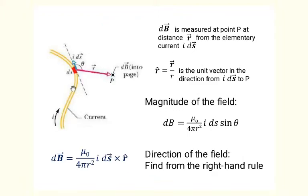Let us now understand the various terms in this formula. dB is measured at point P at distance r from the elementary current i times ds. r-hat is the familiar unit vector pointing in the direction from i ds to P. It is given by the total vector r divided by the length of r. If theta is the angle between the vectors ds and r, then the magnitude of the field is given by mu_0 divided by 4 pi r squared times i times the magnitude of ds times sine theta. The direction of the field is found from the right-hand rule.